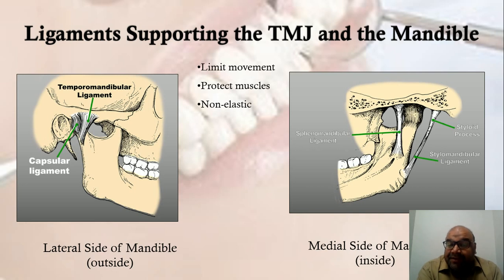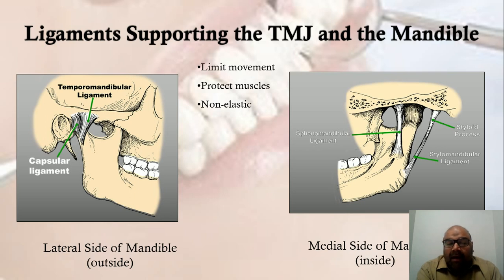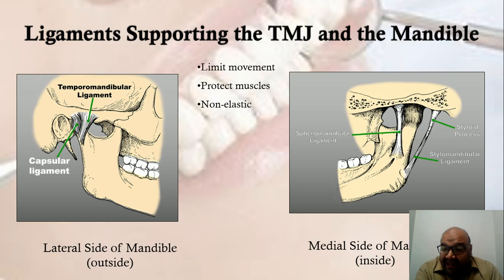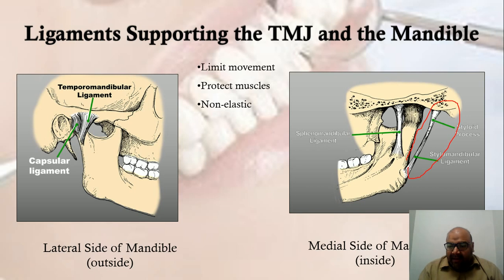One of the primary functions of the temporomandibular ligament is to limit movement, and by limiting movement it protects the muscles and the teeth as well. All of these ligaments — whether primary, accessory, or supplementary — are non-elastic. On the medial side we have the stylomandibular ligament and the sphenomandibular ligament as accessory ligaments.